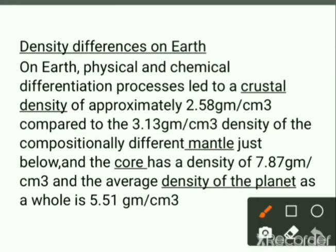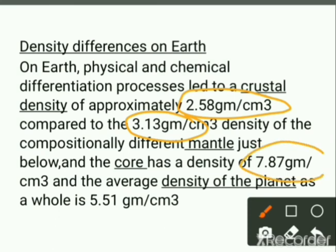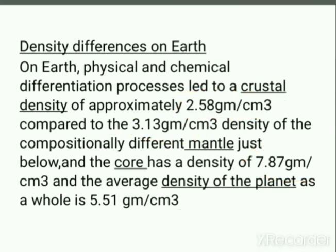On Earth, physical and chemical differentiation processes led to density changes across layers. The crustal density is 2.58 g/cm³, the lower and denser mantle has a density of 3.13 g/cm³, and the core has a density of 7.87 g/cm³. The average density of planet Earth is 5.51 g/cm³.